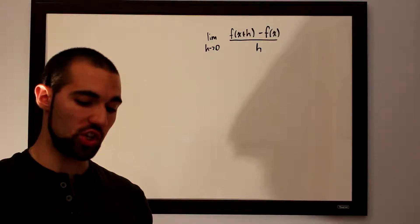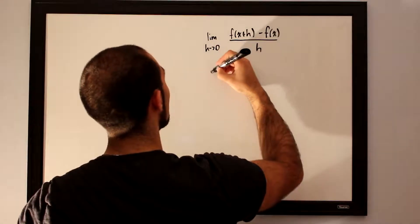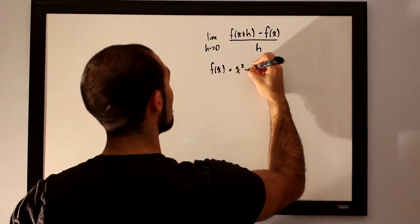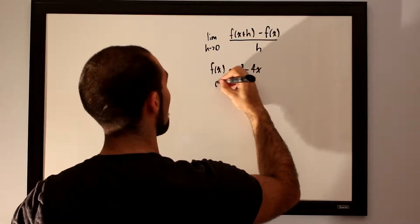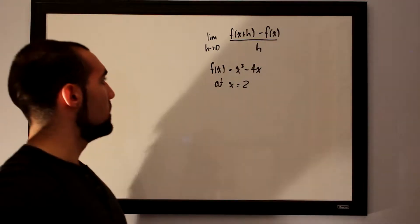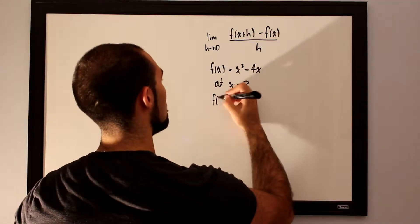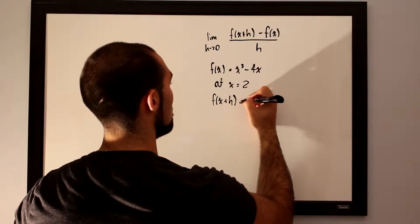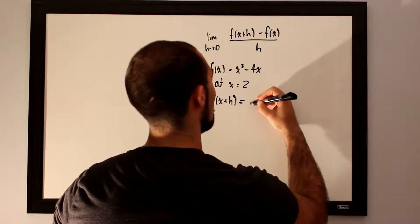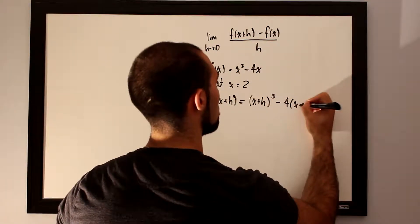This next question asks us to evaluate the slope of the function f of x equals x to the third minus 4x at x equals 2. So f of x equals x cubed minus 4x, and we need to evaluate the slope at x equals 2. First, let's find f of x plus h by substituting x plus h wherever we see x, giving us x plus h to the third power minus 4 times x plus h.